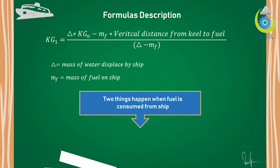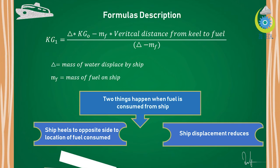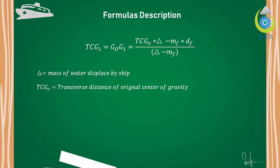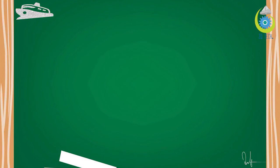Two things happen when fuel is consumed from the ship: the ship heels to the opposite side from the location of fuel consumed, and the ship displacement reduces. Here is the formula for G0G1: G0G1 = (tcg0 × Δ − mf × df) / (Δ − mf), where Δ is the mass of water displaced by the ship, tcg0 is the transverse distance of the original center of gravity, df is the horizontal distance from the centerline to the fuel (which was −11), and mf is the mass of fuel. This formula uses horizontal distances, whereas the KG1 formula uses vertical distances.